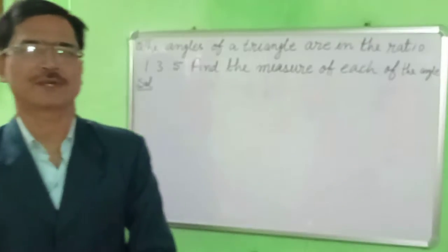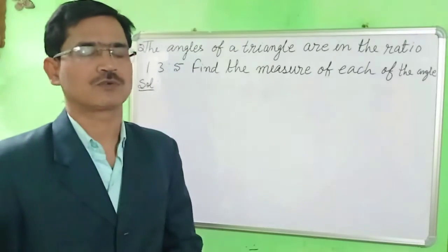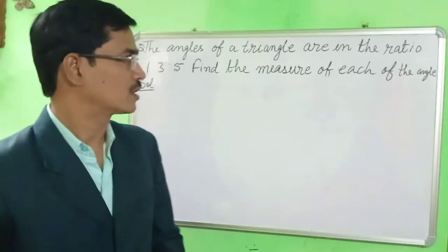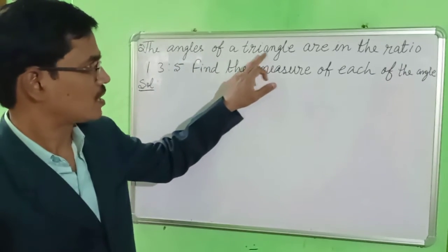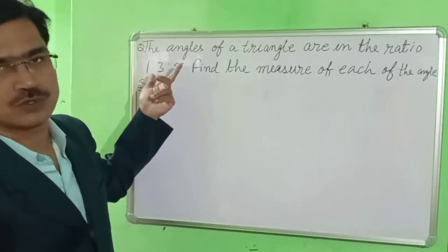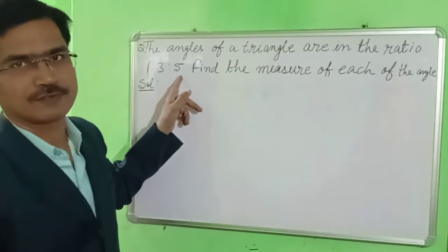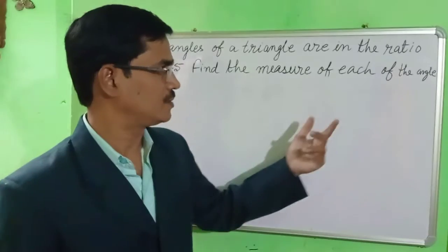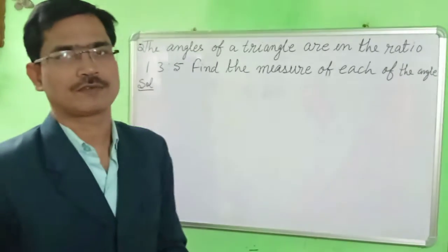Hello everyone, I am Deepak Shivastra. I have taken one question related to triangles. The word problem is: the angles of a triangle are in the ratio 1:3:5. You have to find the measure of each angle — what are the measures of the angles?